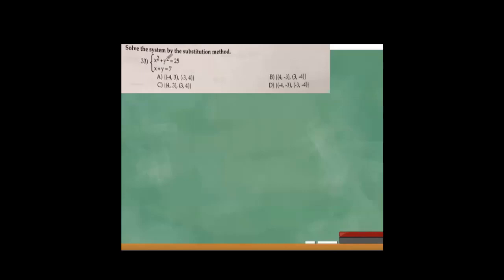Solve the system by substitution. This is a non-linear equation. The first equation is a circle and the second is a straight line. A circle and a line can have up to two points of intersection. Using substitution, take the second equation and solve for x by subtracting 7: x equals 7 minus y. Substitute into the first equation x squared plus y squared equals 25, replacing x with (7 minus y).